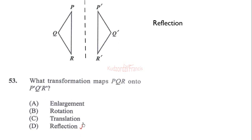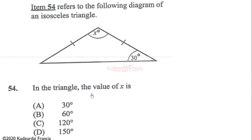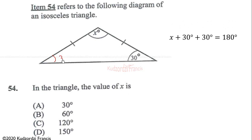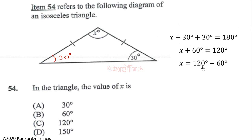Question 54: in the triangle, find the value of x. This is an isosceles triangle, and all angles must add up to 180 degrees. The base angles of an isosceles triangle are equal, so both base angles are 30 degrees. Adding: 30 + 30 = 60, then subtracting from 180 gives x = 120 degrees.